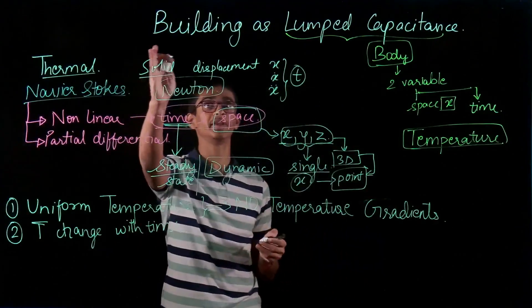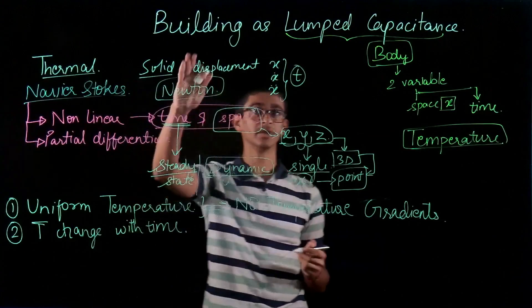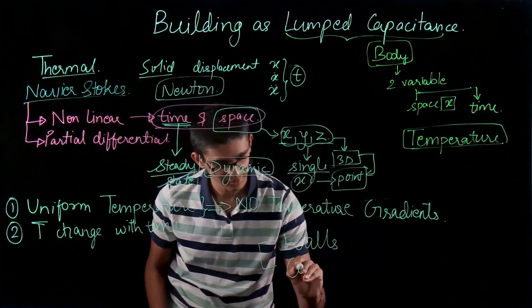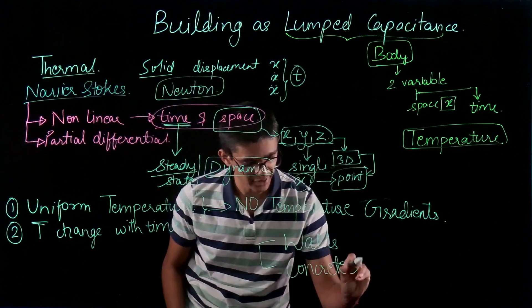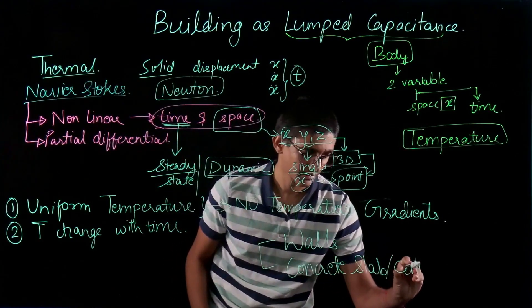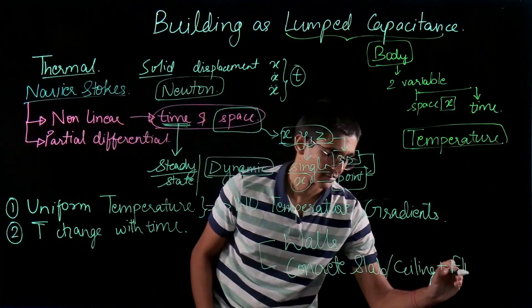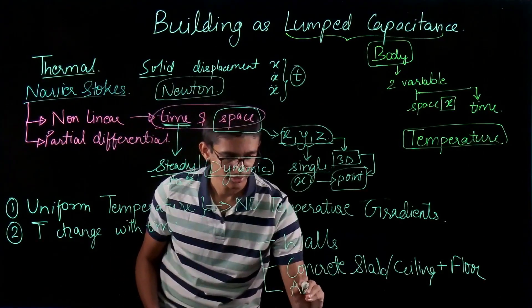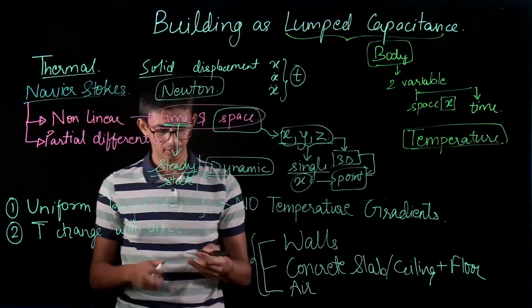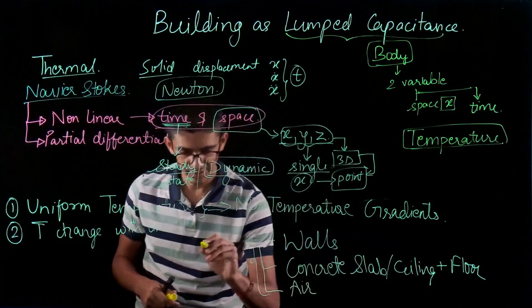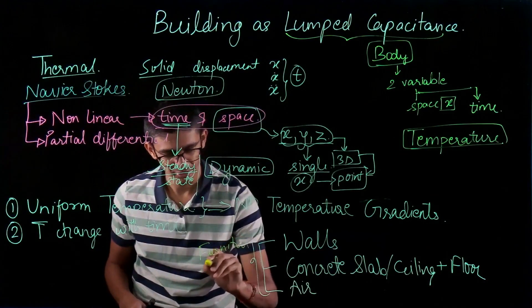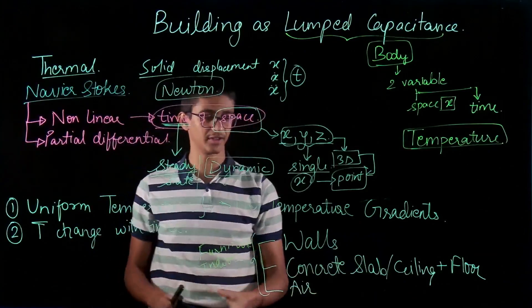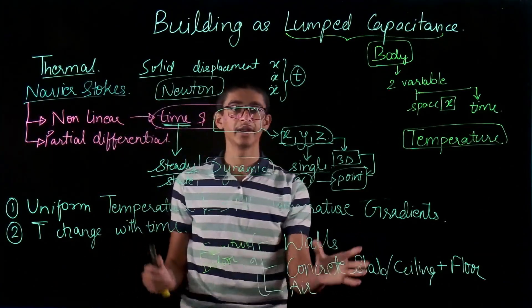So when we start solving a building as a lump capacitance, what we are going to do is we will take a building which will have walls, concrete slab (ceilings or floor), and the third is obviously the building encloses air inside them. So there are these three usual components of our building and we do have some furniture, some indoor articles.